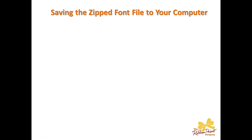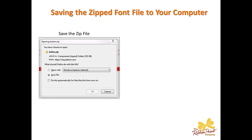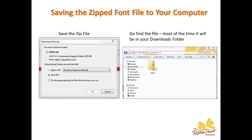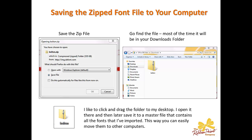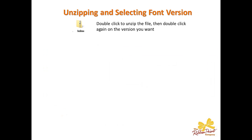Back to downloading — I'm going to save the zip file to the computer. Once I press the download button, I'm going to select Save File. It will save the entire zipped file onto my computer. Most of the time it will be in your downloads folder. What I like to do is take it from that folder and drag it over to my desktop, open it there, and save it to a master file that contains all the fonts I've imported over time. This way you'll have all your fonts in one place and can easily move them from computer to computer.